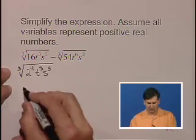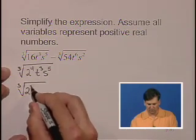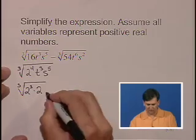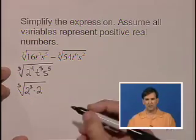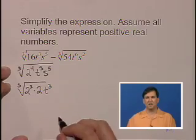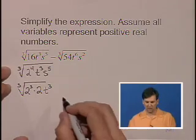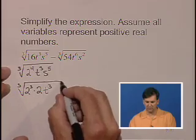So let's do the cube root of 2 cubed times 2, t cubed, already to the power of 3, so let's leave that. s to the fifth, we're going to use s cubed, which we know the cube root of, and s squared, which we don't. s cubed is the biggest one that we can get in there, so s cubed times s squared.